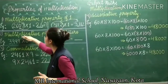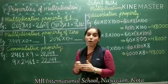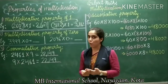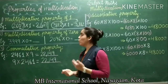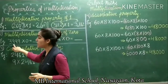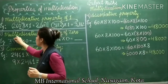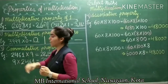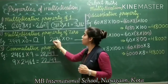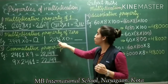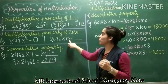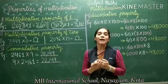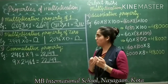The next property is the multiplicative property of 0. What does this property say? When we multiply any number by 0, we get the product 0. For example, I have taken 3,999. I am going to multiply this number by 0, so the product will be 0. Again, the next example is 2,096. I am going to multiply 2,096 by 0, so the product will be 0. Whenever we multiply any number by 0, we get the product 0.